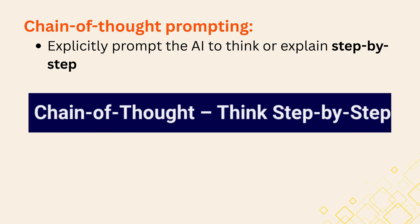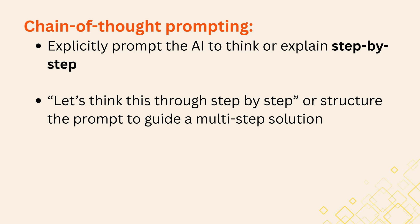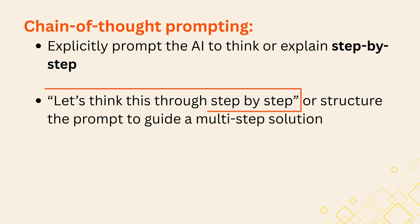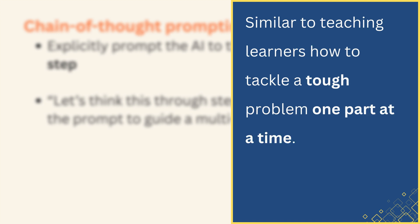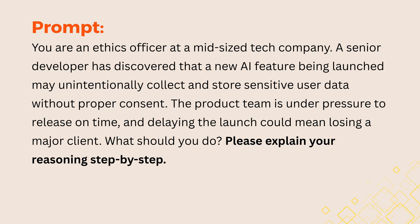Ready to get the AI to show its work? Chain-of-thought prompting is a technique where you explicitly prompt the AI to think or explain step-by-step, essentially revealing the reasoning chain it follows. This can be as simple as appending a phrase like 'let's think this through step-by-step' to your query, or structuring your prompt to guide a multi-step solution. The idea is to have the AI break down a complex problem into smaller, logical steps — much like how we'd teach students to tackle a tough problem one part at a time.